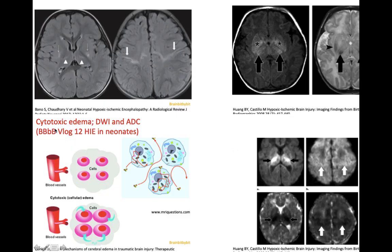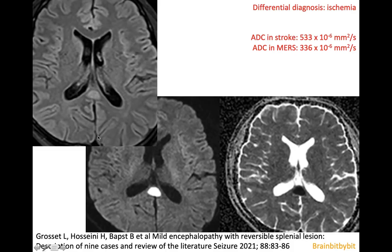Considering cytotoxic edema, one should also think of ischemia, and especially in adults it might be difficult to make the distinction. Clinically, in ischemia there is an acute onset, whereas in MERS there is encephalopathy. On imaging, in MERS the ADC is much lower than in stroke. So measuring the ADC might guide the clinician in making the distinction.